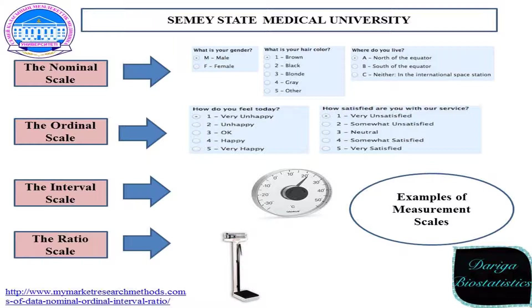Ordinal scale: 'How do you feel today?' – very unhappy, unhappy, okay, happy, very happy. We can also code options. A second example for an ordinal variable: 'How satisfied are you with our service?' – very unsatisfied, somewhat unsatisfied, neutral, somewhat satisfied, very satisfied. Interval scale: a tool for measuring products. And ratio scale: a tool for measuring height.